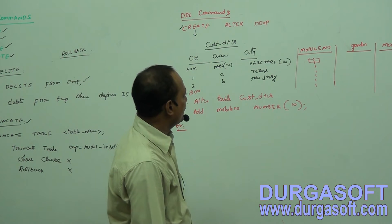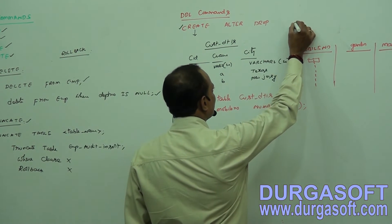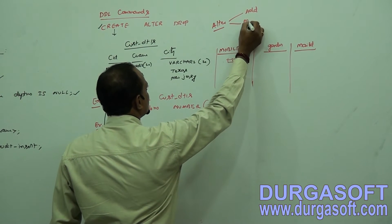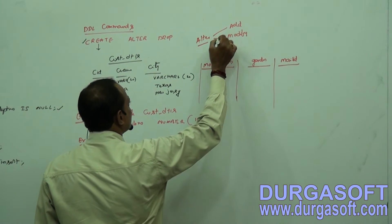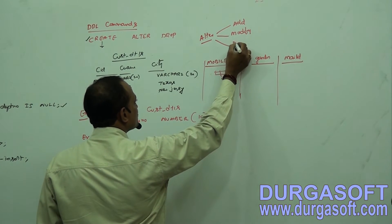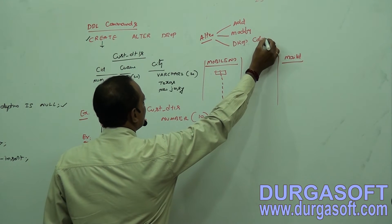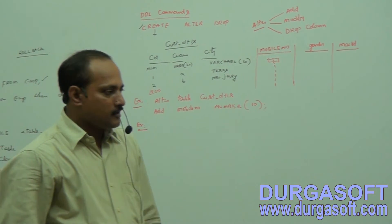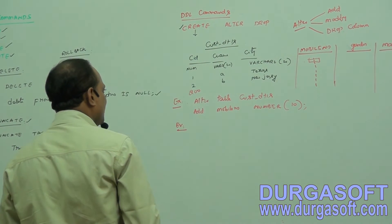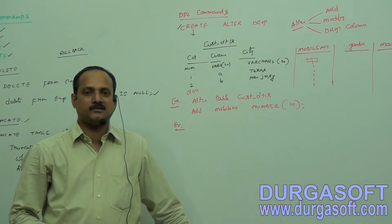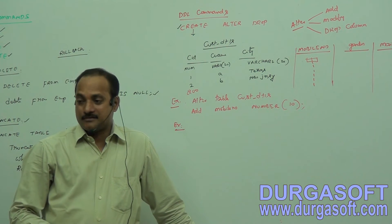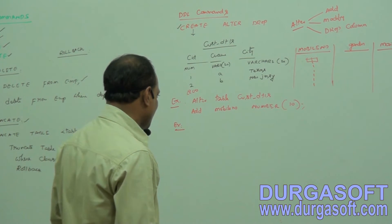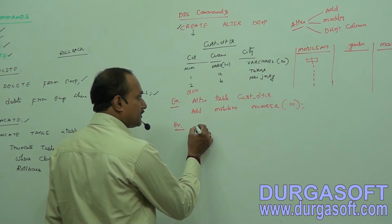The ALTER command is useful for three things: adding columns, changing a column's data type and size, and deleting columns using the DROP COLUMN keyword. ALTER TABLE with ADD adds columns; ALTER TABLE with MODIFY changes data type and size; ALTER TABLE with DROP COLUMN deletes the column.